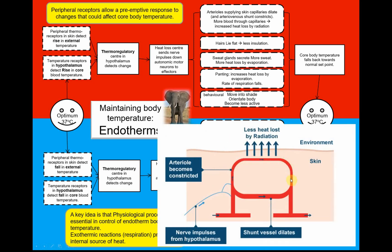In the exam they might show you different diagrams, so it's worth being familiar with variations. We've got less blood going through the skin capillaries and more blood bypassing them through the shunt — this is why your skin goes pale when you're cold. Less blood is flowing through the skin because you're trying to keep that heat in the core and away from your periphery.